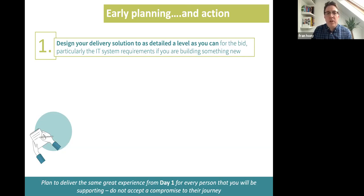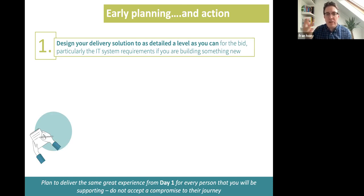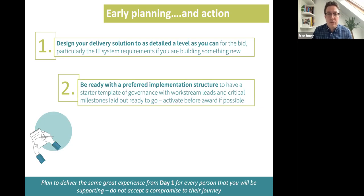In terms of early planning recommendations: first, design your delivery solution to as detailed a level as you can. For the bid process, if you can really invest time in nailing down the detailed handoffs, the processes, usage of the IT system and its requirements, do that as much as possible during the bid. You don't want to take a flyer on that detail and then realize something doesn't work. Areas that tend to be left too late include employer services handoffs, IT system requirements, business reporting requirements — these should be covered early on.